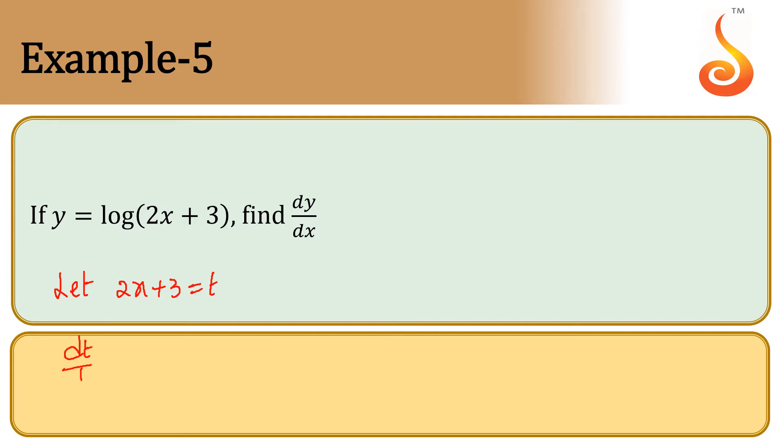So what do we get? dt/dx equals the derivative with respect to x of 2x plus 3, which is 2.